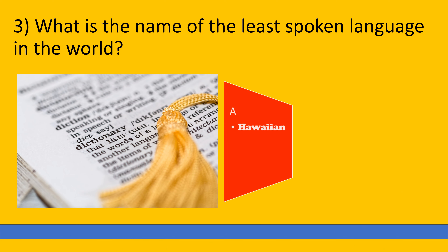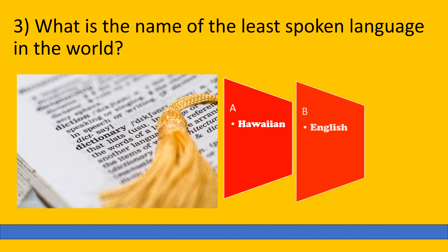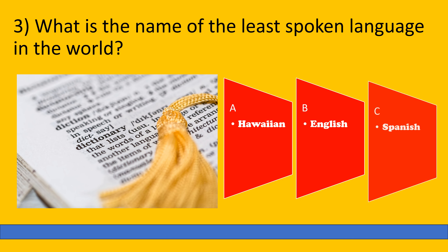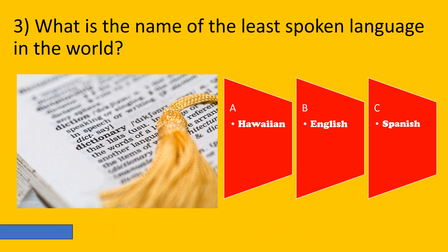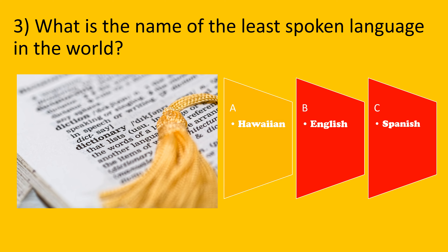What is the name of the least spoken language in the world? A: Hawaiian, B: English, C: Spanish. The correct option is A, Hawaiian.